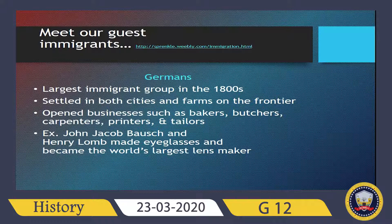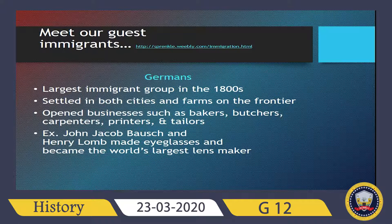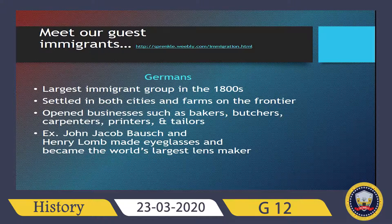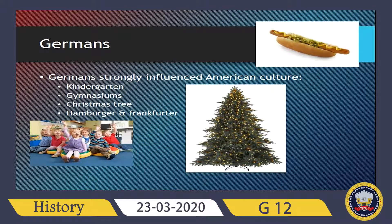Germans were the largest immigrant group in the 1800s. They settled in both cities and farms on the frontier and opened businesses such as bakeries, butcher shops, and carpentry. Germans strongly influenced American culture — for example, they introduced kindergarten, the gymnasium, the Christmas tree, the hamburger, and many other things.